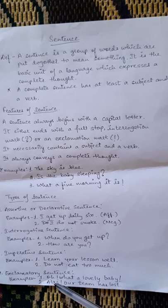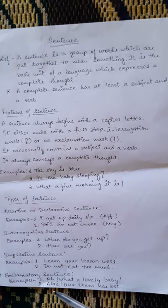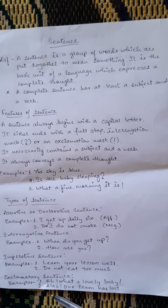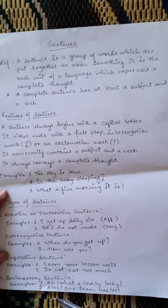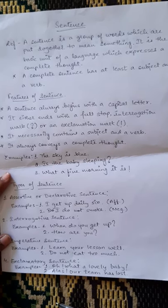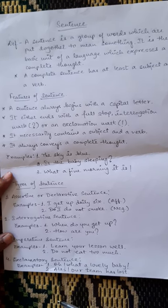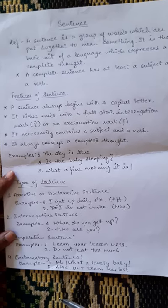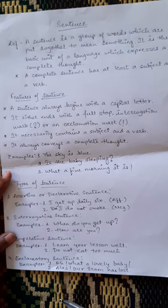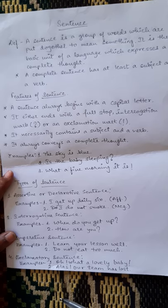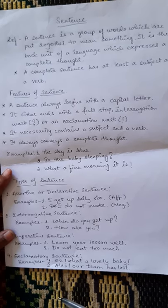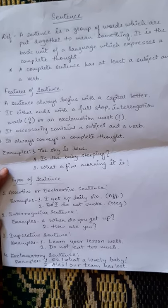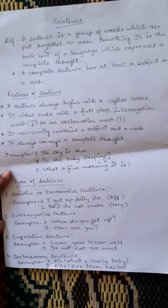The last type is the exclamatory sentence. An exclamatory sentence always expresses a strong feeling — good or bad — about a particular person's life. For example, 'Oh, what a lovely baby!' tells you the beauty of a particular baby. And 'Alas, our team has lost!' — alas means you feel sad that your team lost, so you face some difficulty. These are the types of sentences. Go through these types and features in your lesson.